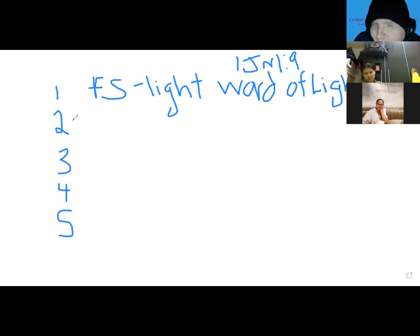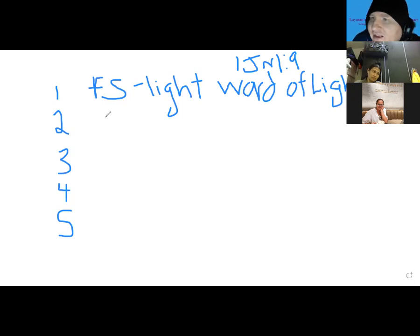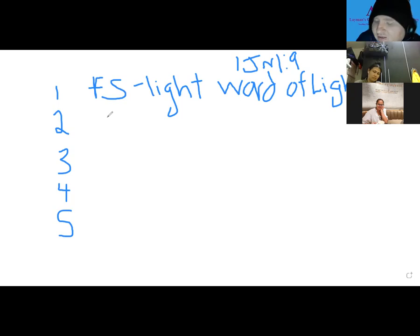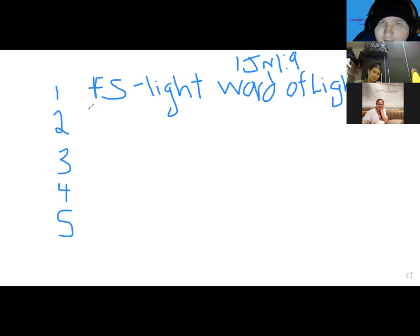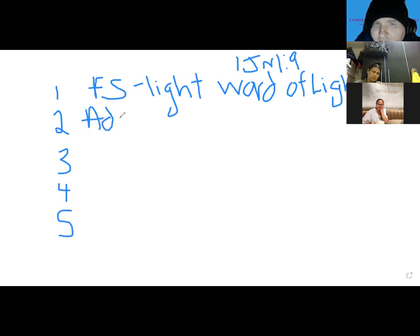How does chapter two begin? John writes: 'These things I write to you, little children, in order that you may not sin.' But if we sin, we have an advocate with the Father — Jesus Christ the righteous. He is the propitiation not only for our sins but for the whole world. So chapter two has the advocate and propitiation — the cross.